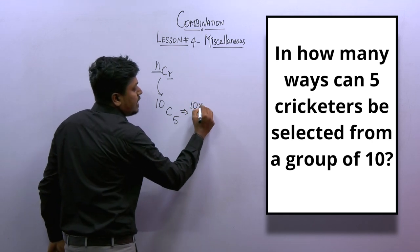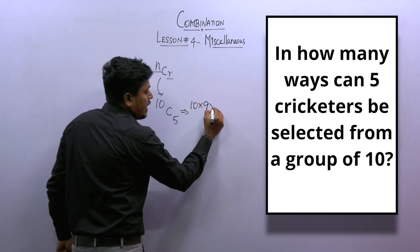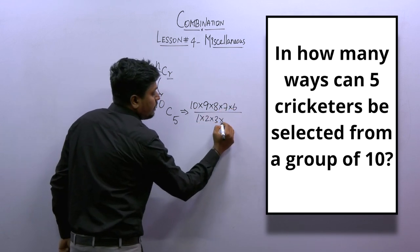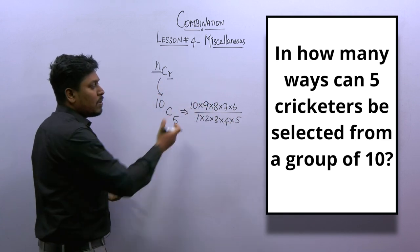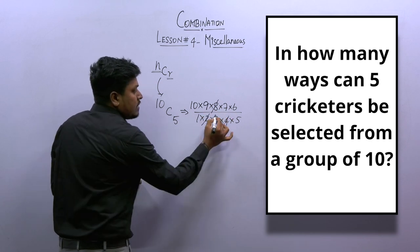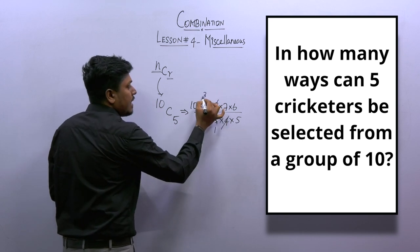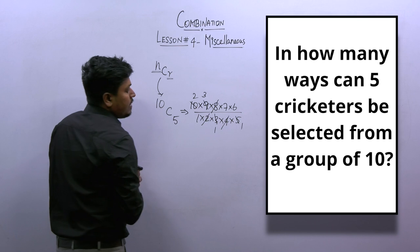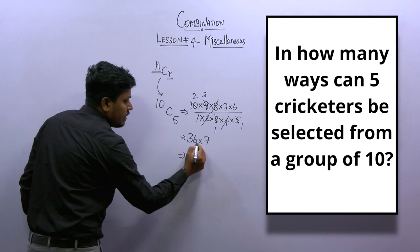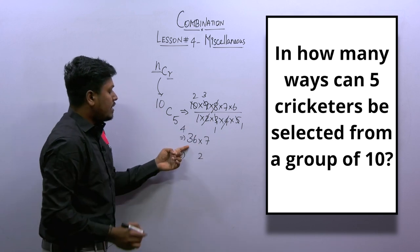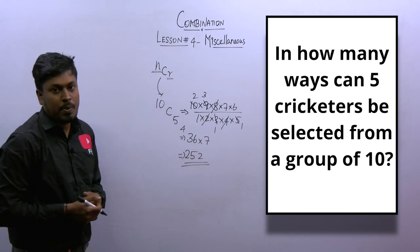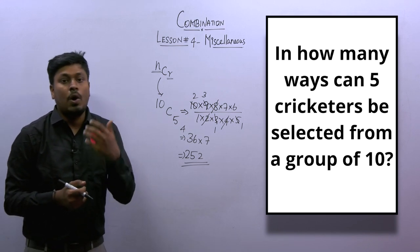Now we expand 10C5 as 10 × 9 × 8 × 7 × 6 divided by 1 × 2 × 3 × 4 × 5. We cancel: 4 × 2 = 8, 3 × 3 = 9, 5 × 2 = 10. Then 3 × 2 = 6, and 6 × 6 = 36. Finally, 36 × 7 = 252. So the answer to question number 1 is 252 ways to select 5 caricatures out of 10.